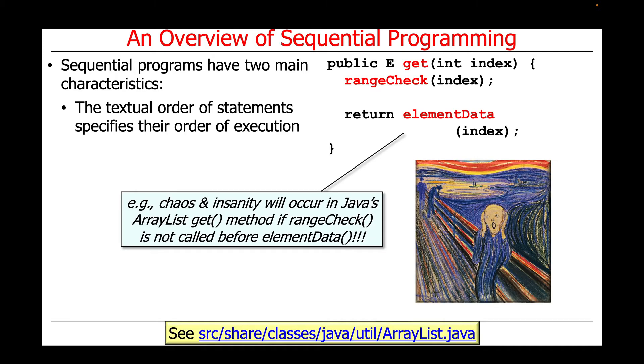Let's take a look at an example that comes from the Java ArrayList class. There's a get method that returns the index element in the ArrayList. It has a method called range check that checks to make sure the index is in range, and then a call to a method called element data that returns the value at that index.